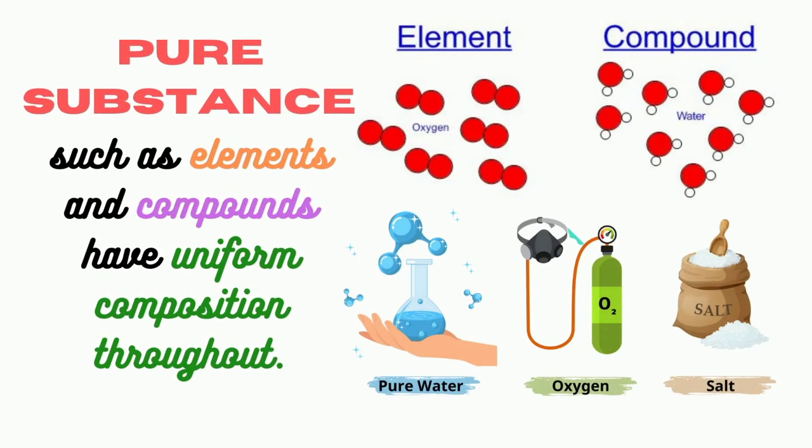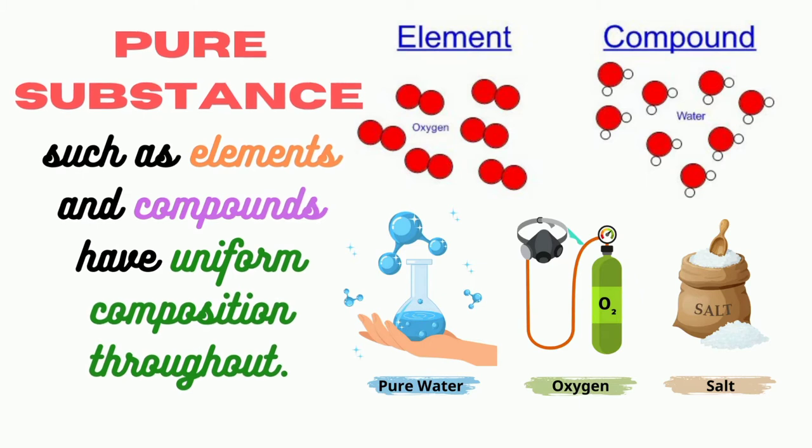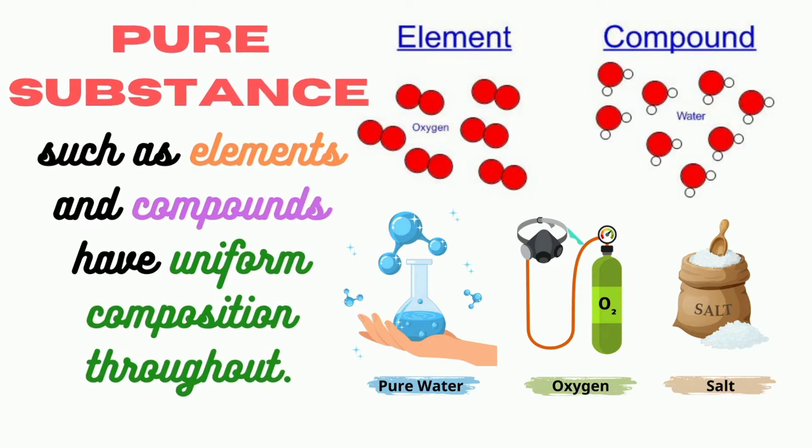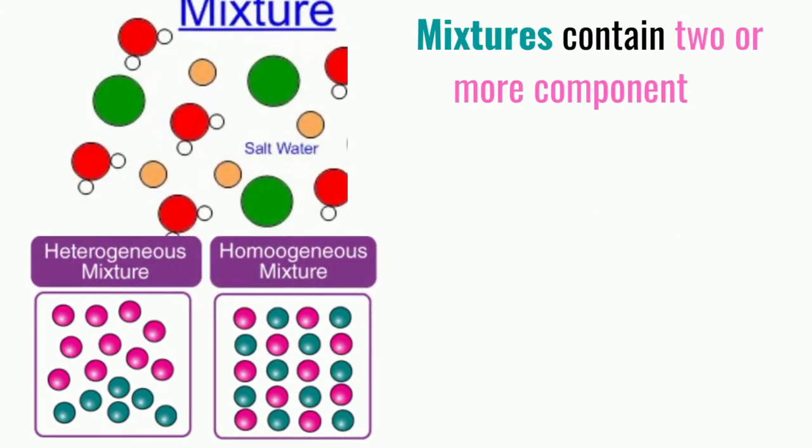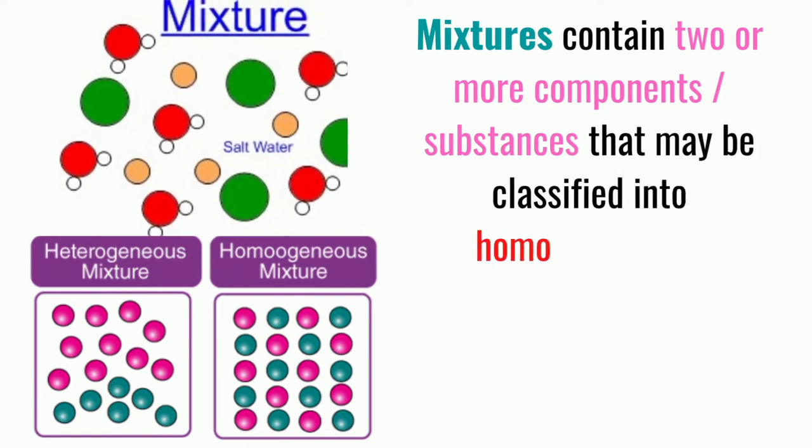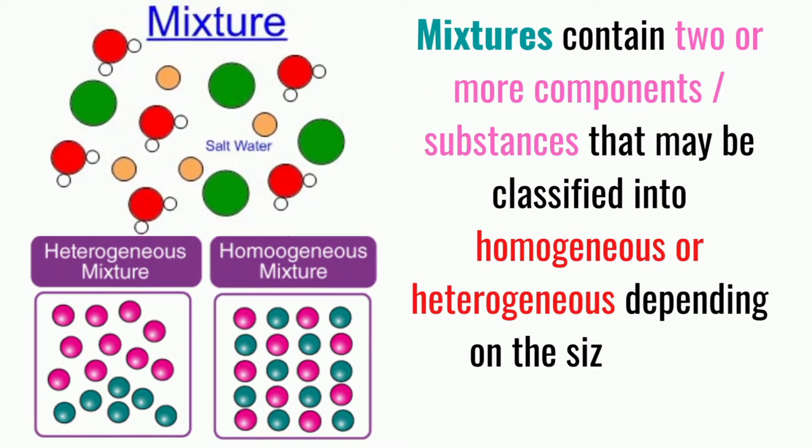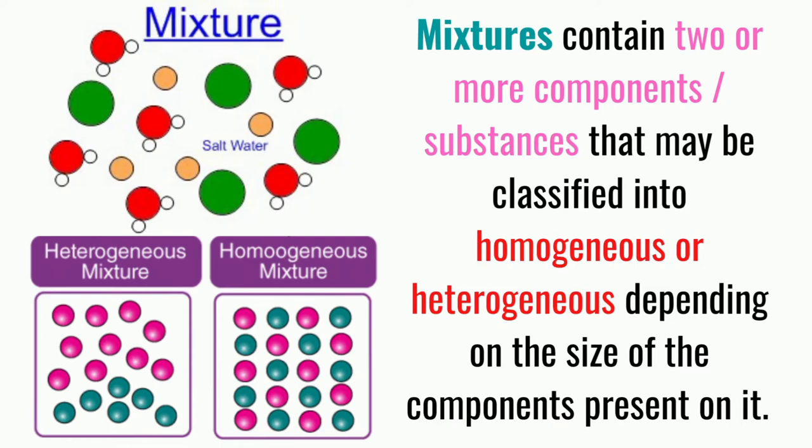Pure substances such as elements and compounds have uniform composition throughout. Mixtures contain two or more components, substances that may be classified into homogeneous or heterogeneous depending on the size of the components present in it.